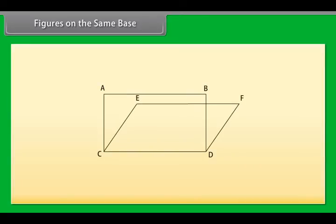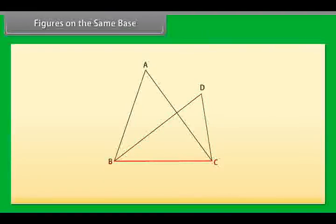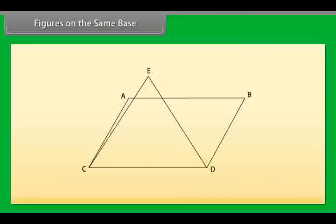Look at this figure. We have got two figures here: a rectangle ABCD and a parallelogram CDEF. We can see that both the figures are on the same base, CD. Similarly, in this figure, triangle ABD and triangle BCD are on the same base, BC. Here, triangle ECD and parallelogram ABCD are on the same base, CD.